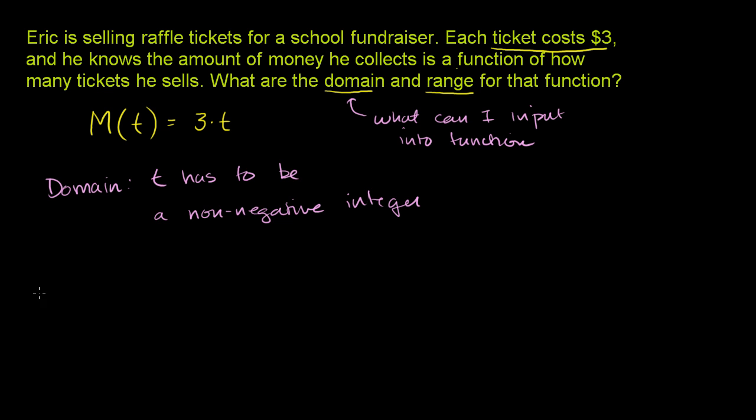Let's think about what our range is. Our range is the possible values that we can take on. If T is always going to be a non-negative integer, then what's 3T always going to be? Well, it's going to be a non-negative multiple of 3. So non-negative multiples of 3.